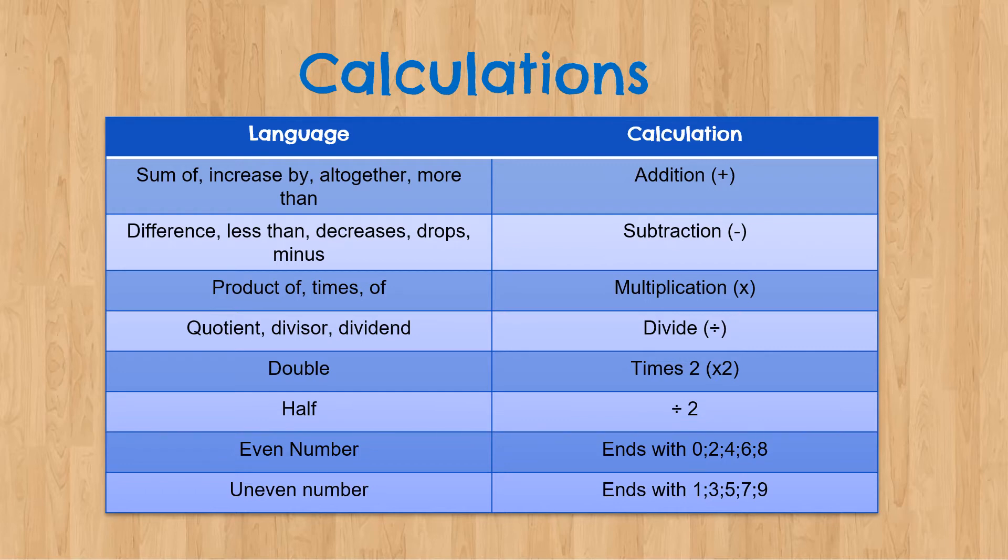When we double something, it tells us that we have to times two. Half is the opposite thereof, so we have to divide by two. Even numbers always end with a zero, two, four, six or eight. And uneven number always ends with one, three, five, seven and nine.